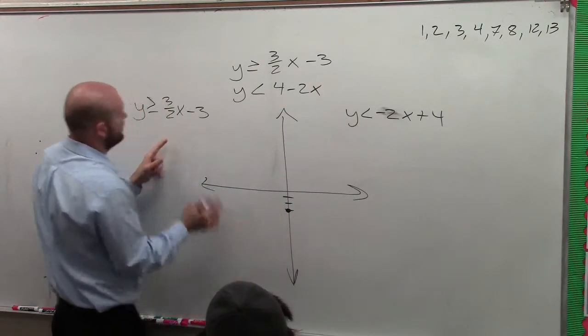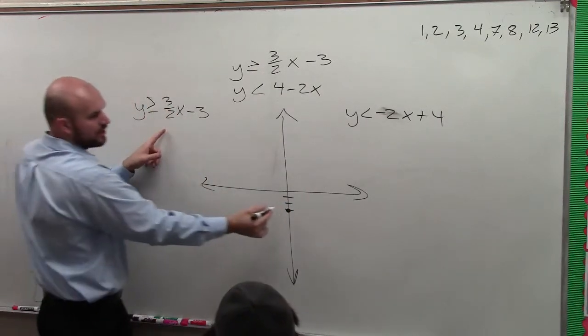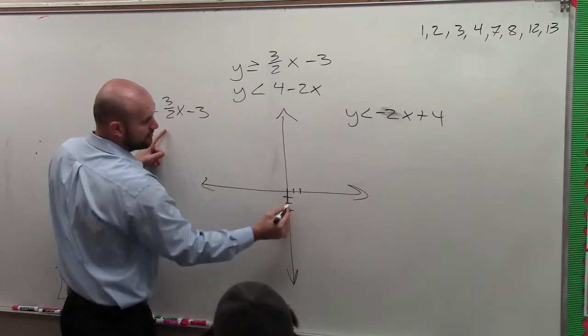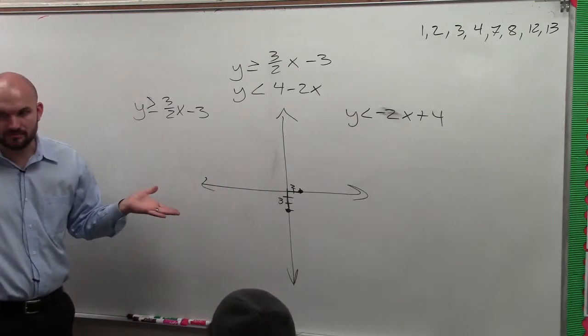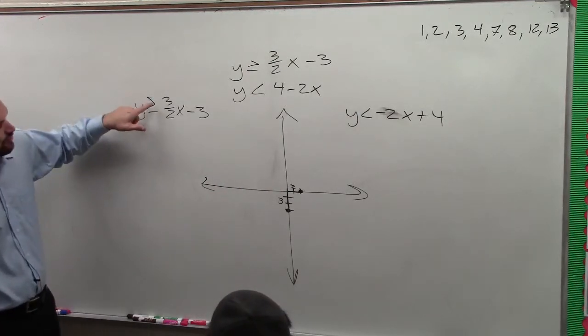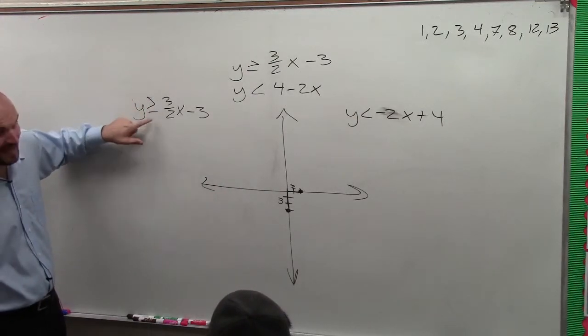make a point. Here my slope is 3 over 2, so I go up 3 over 2. So everybody follows me how to graph a line, right? We're OK with this. Notice this is greater than or equal to, so that's going to be solid, right?